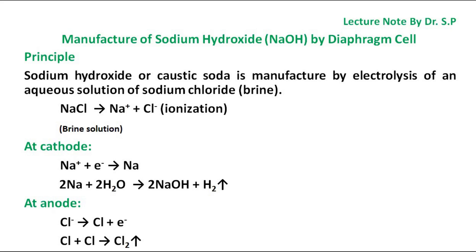Principle: Sodium hydroxide or caustic soda is manufactured by electrolysis of an aqueous solution of sodium chloride, which is called brine. Ionization of brine takes place to produce sodium cation Na⁺ and chloride Cl⁻ ion.